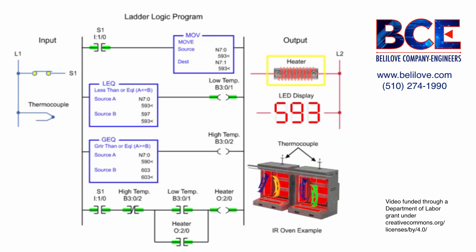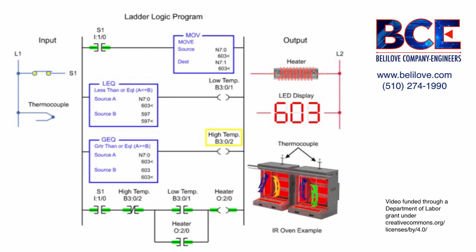The heater remains on as long as the low temp output is true and the high temp output is false. As the temperature rises above source B of the less than or equal to instruction, low temp turns off and heating continues. Reaching 603 degrees or more, the high temp output is enabled since source A is equal to source B of the greater than or equal to instruction.